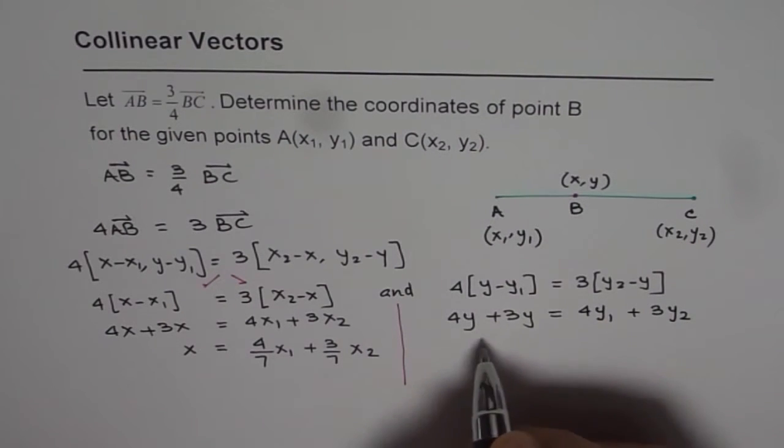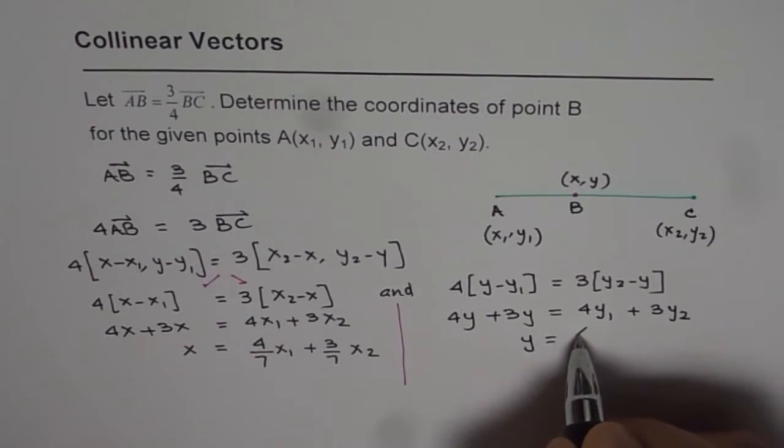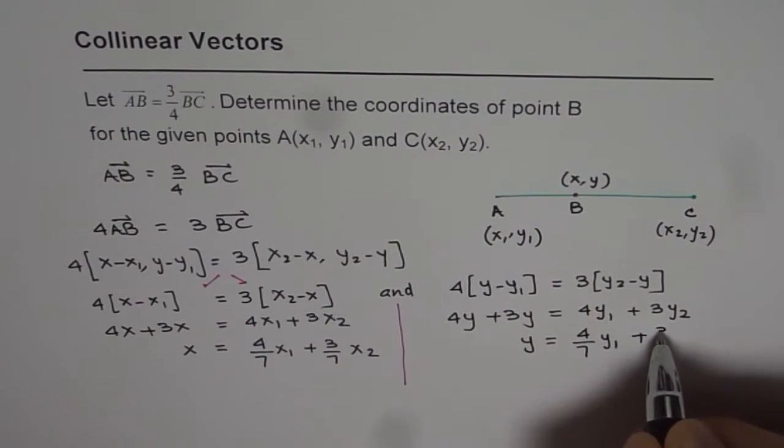Now 4 plus 3 is 7, so we have 7y equals 4y₁ plus 3y₂.